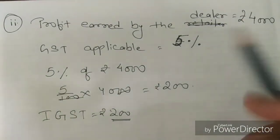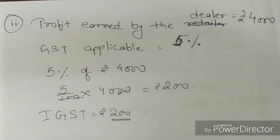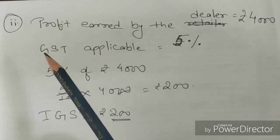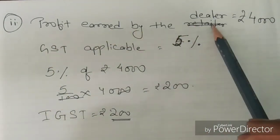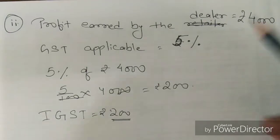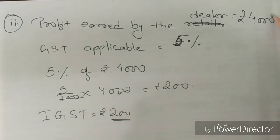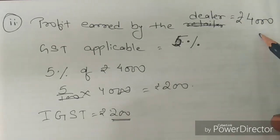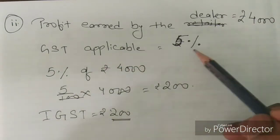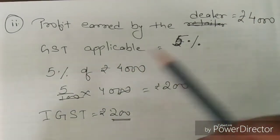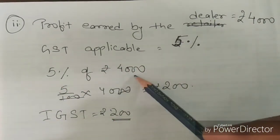So the second part is the tax paid by the dealer to the government. Now the profit earned by the dealer is Rs 4,000. So obviously the tax which he is going to pay will be applicable on this particular amount.